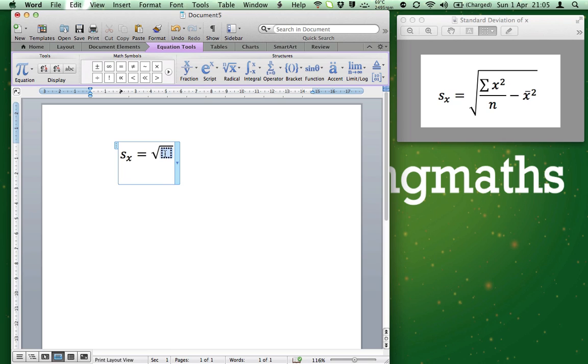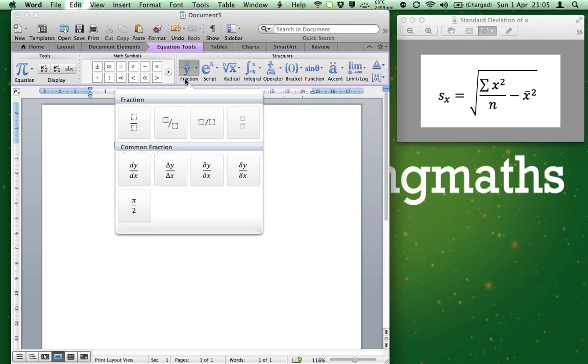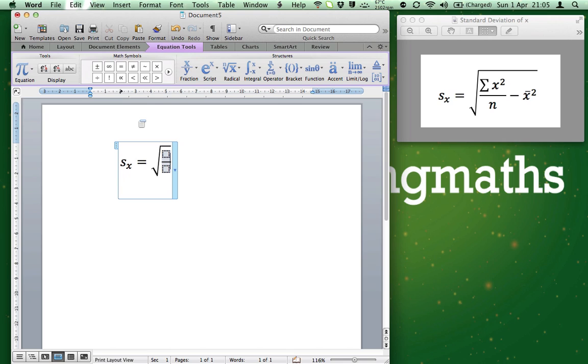The next thing that we see is a fraction. Click the fraction icon and select the first one. Now press the minus key and then the letter X. We now have the main bulk of the equation created. Let's finish it off.